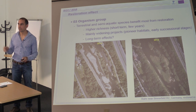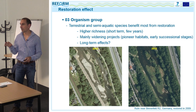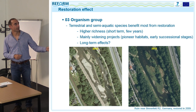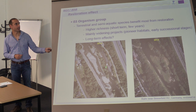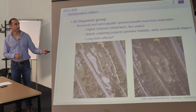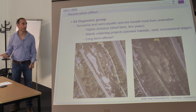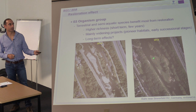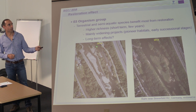Many studies in literature, including our review, investigated mainly widening projects. These provide pioneer habitats and early successional stages in the first years. But as visible in photos taken just two years after restoration, these pioneer habitats vanish over time as succession occurs. Without restoring a natural flow regime, there is no rejuvenation of these habitats. The question is: what are the long-term effects, as open gravel bars become vegetated over time?